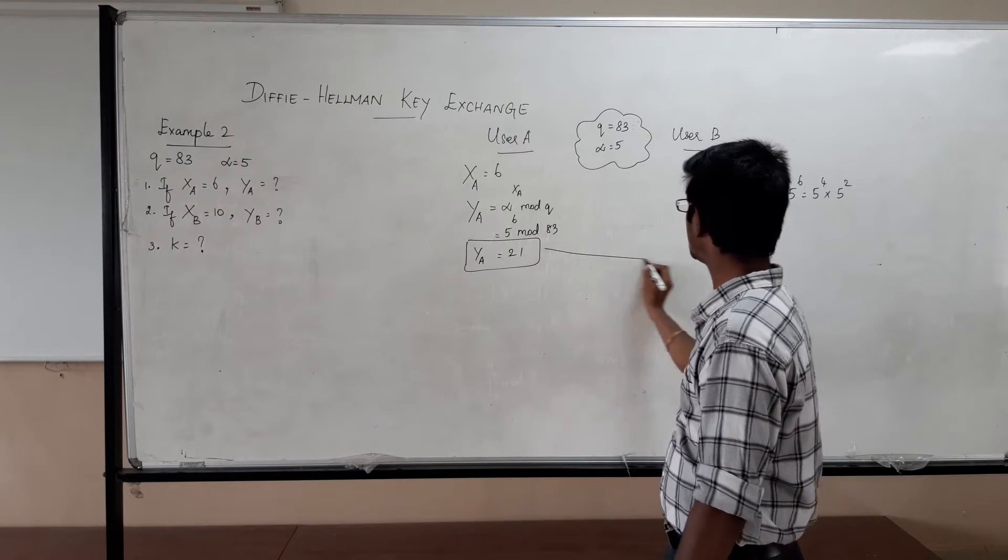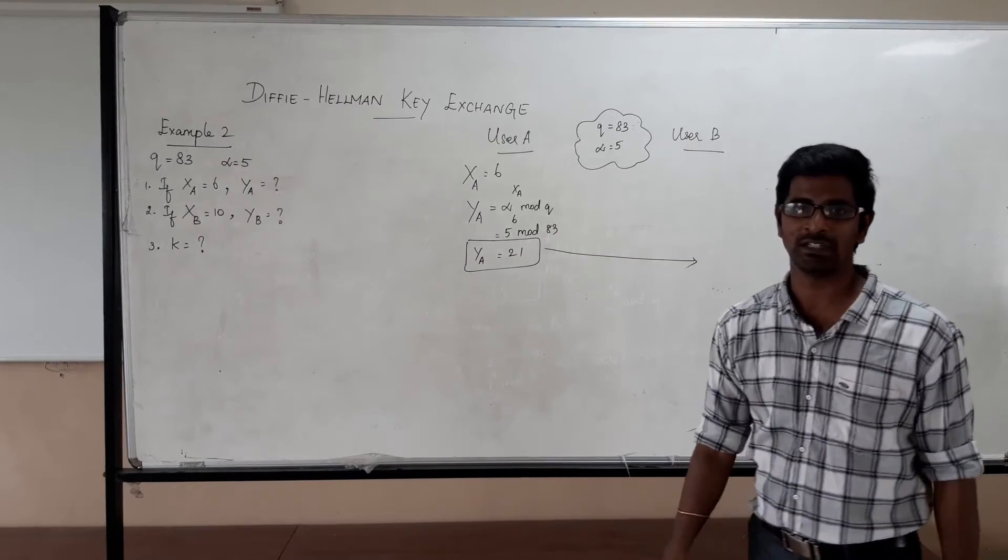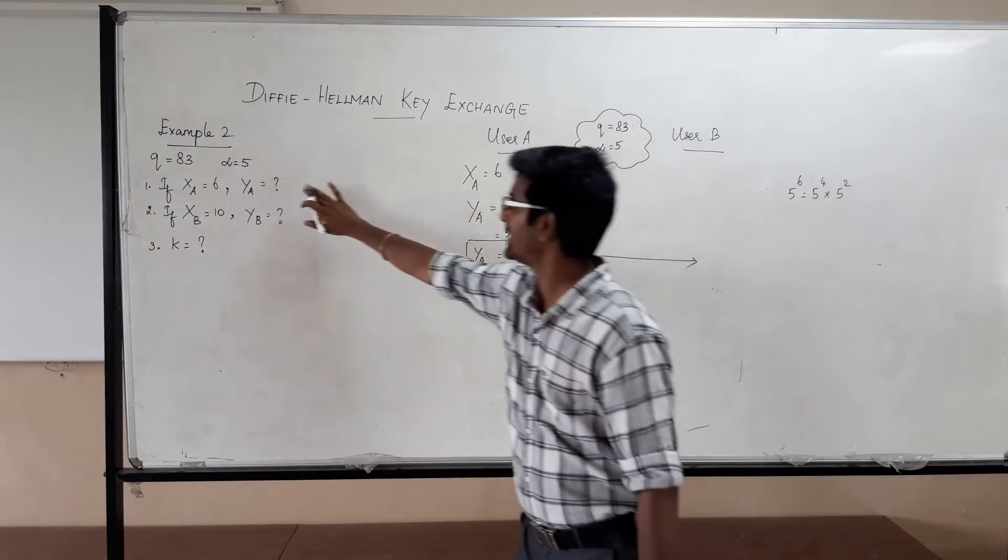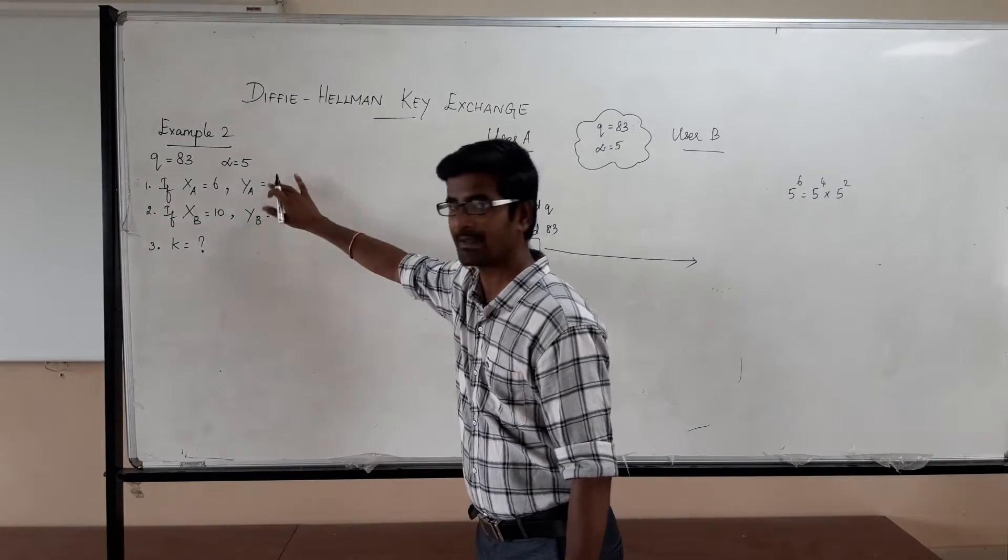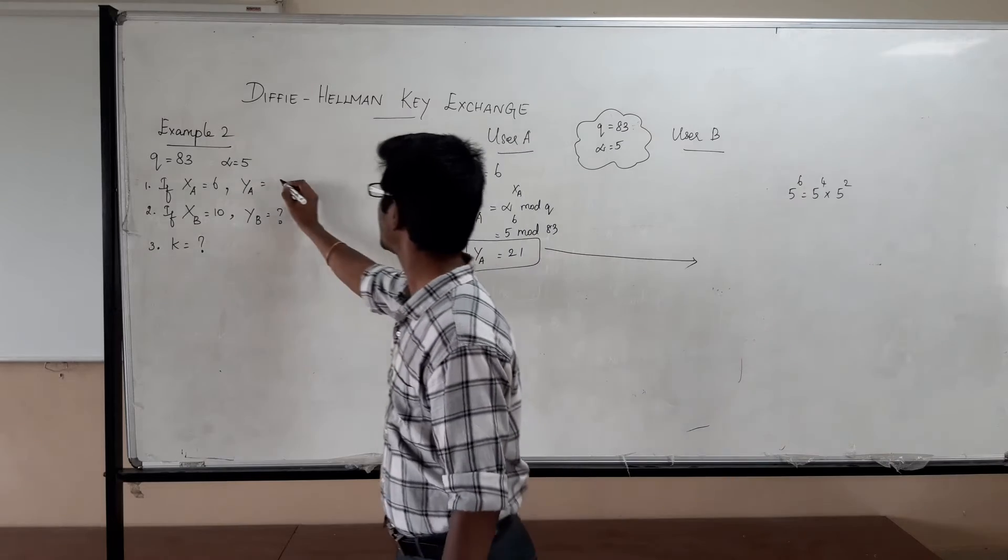Now this 21, user A is going to give it to user B. Now this part we have calculated. What is YA? Now YA we have computed as 21.